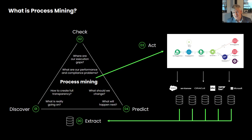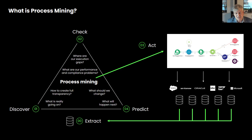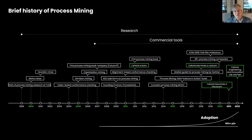If you have enough data and your process is in a steady state, you can go one step further and predict what is going to happen. You can predict: will there be a bottleneck tomorrow? Will this case be deviating? Will this case be late? We can do all of these things and automatically take actions based on this. This way we get a living organism automatically diagnosing problems and taking the corresponding actions.